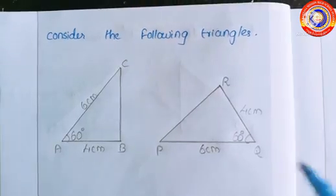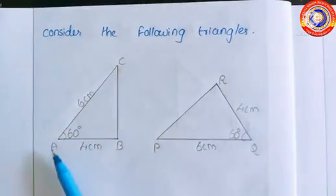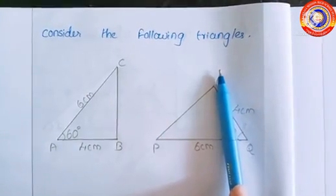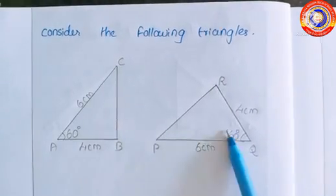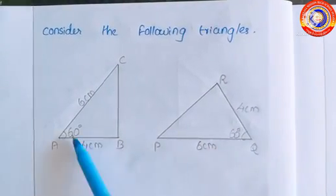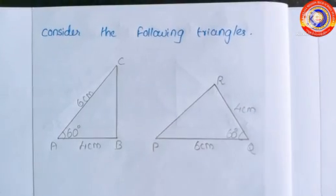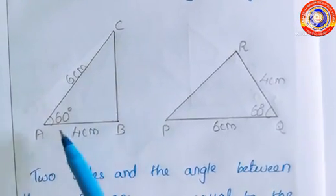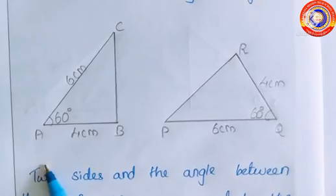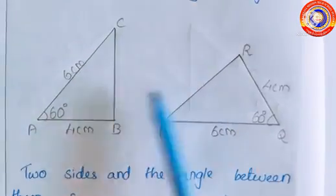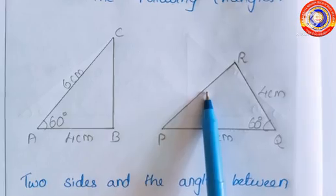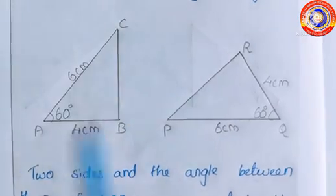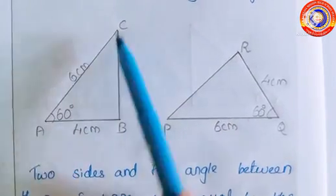Using this general principle, let us consider triangles ABC and PQR. Two sides and the angle between them of triangle ABC are equal to the two sides and the angle between them of triangle PQR. So the third side BC of triangle ABC is equal to the third side QR of triangle PQR.